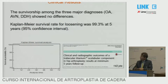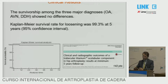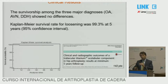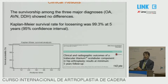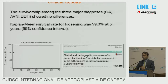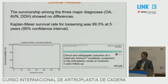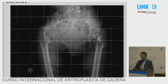That's the paper we published with a minimum five-year follow-up. You can see the Kaplan-Meier survival curve — it was extremely good, and the same for the three major diagnoses: osteoarthritis, avascular necrosis, and DDH. That means we can use this cup in difficult cases as well, such as DDH.